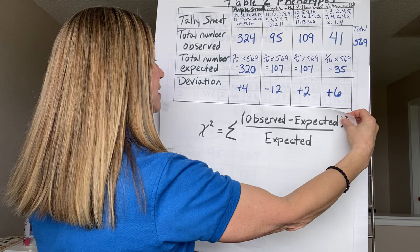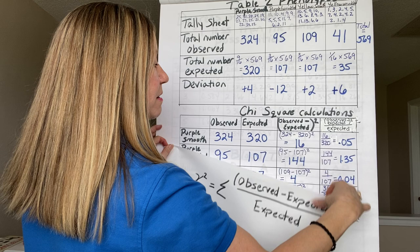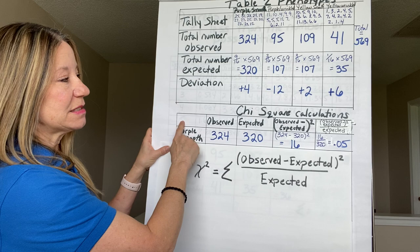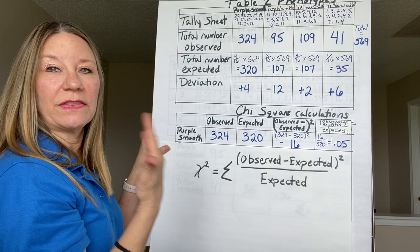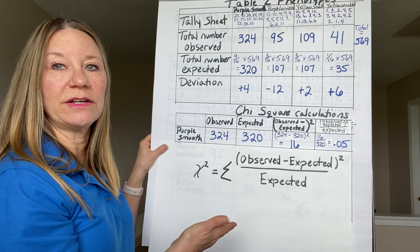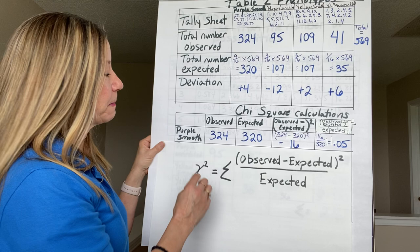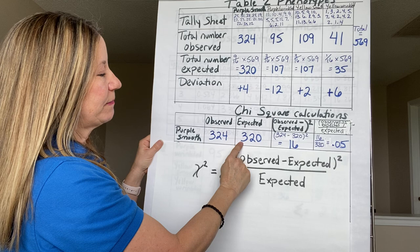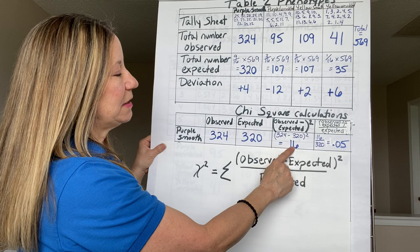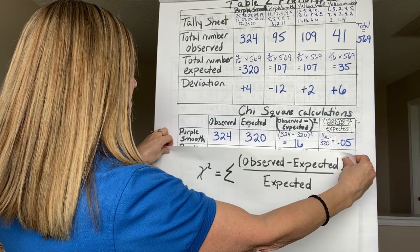I'll show you one at a time so it makes sense. I like to make a chi-square table, and I teach my students to do it as well — it just makes it easier to follow your thinking. For purple and smooth: observed was 324, expected was 320. The difference is 4; square 4 and you get 16. 16 divided by 320 is 0.05.